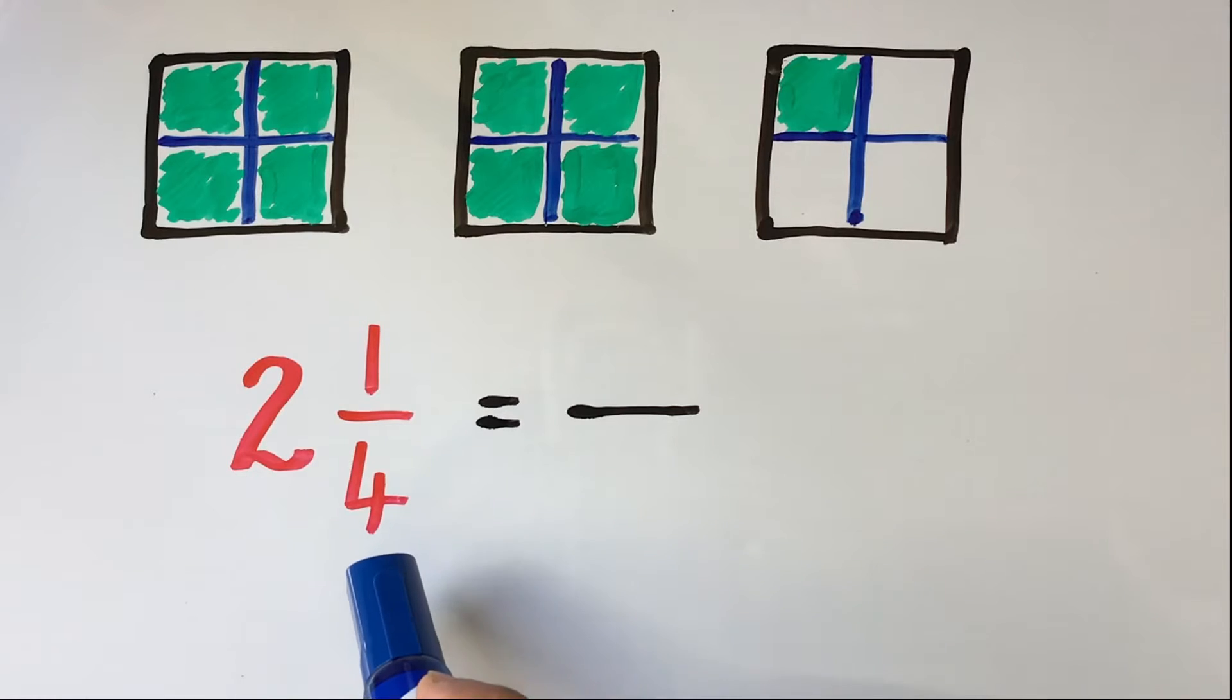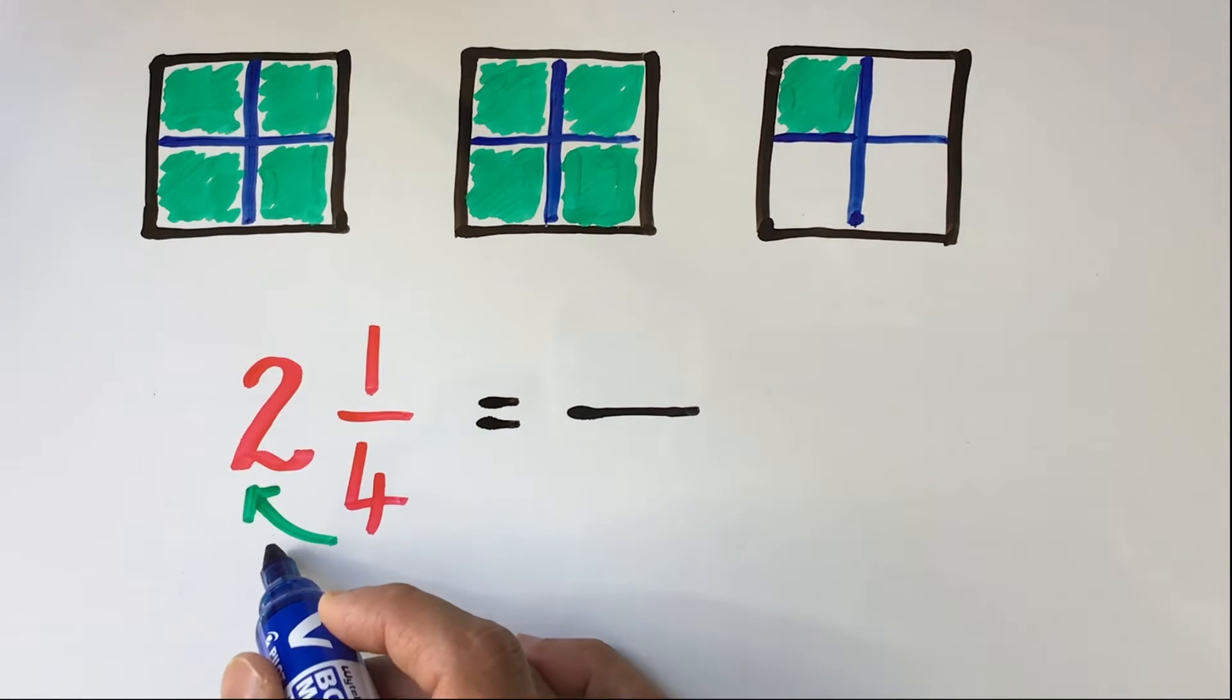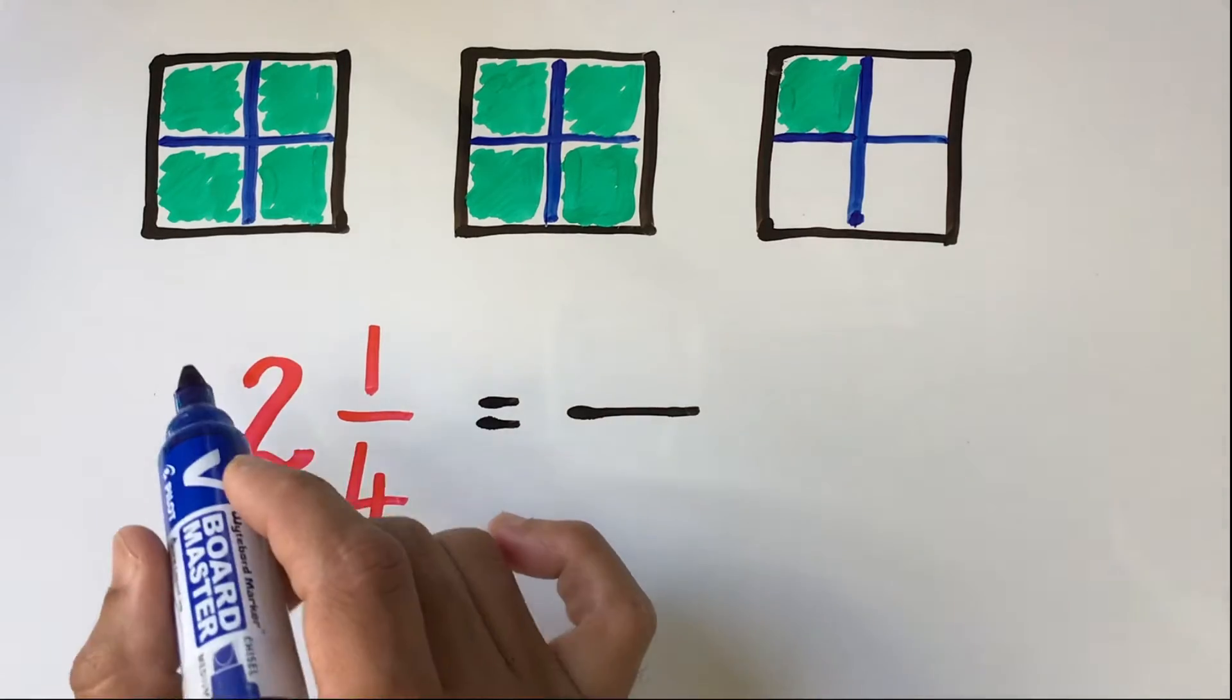Converting a mixed fraction into an improper fraction can be done in two steps. In the first step, we multiply the denominator or the bottom number of the fraction part with the whole number. In this case, 4 times 2, which gives us 8.